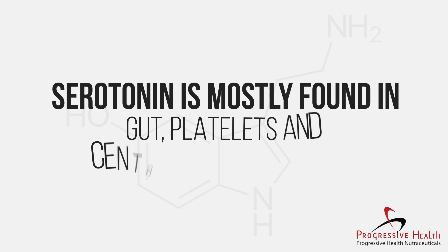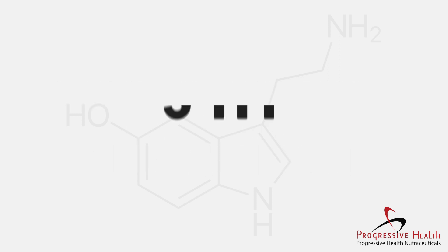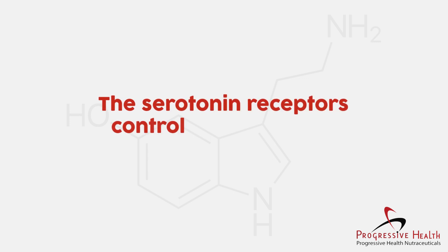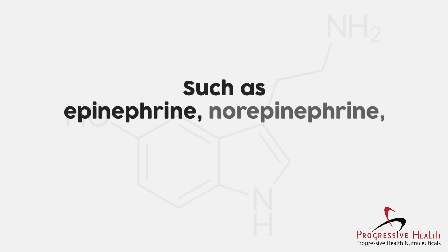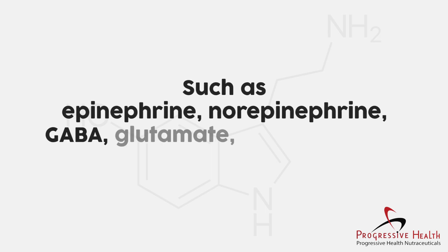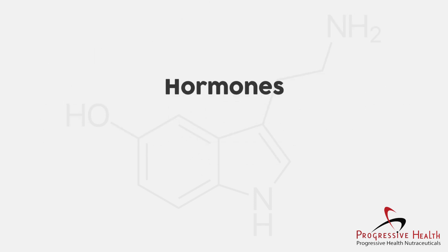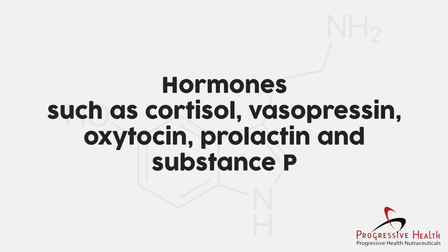Serotonin is mostly found in the gut, platelets, and central nervous system. 5-HT receptors — the serotonin receptors — control the release of neurotransmitters such as epinephrine, norepinephrine, GABA, glutamate, dopamine, and acetylcholine, and hormones such as cortisol, vasopressin, oxytocin, prolactin, and substance P.